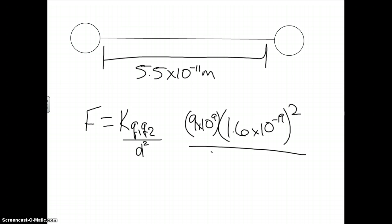And we put that all over our distance and remember to square that. And after you put that into your calculator, you'll get F equals 7.6 times 10 to the negative 8th.